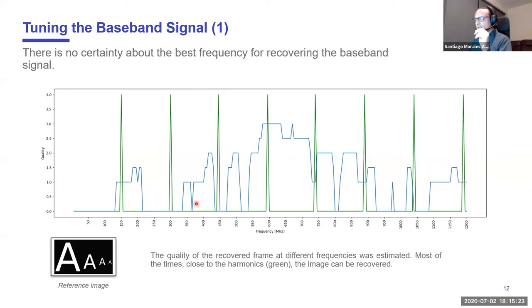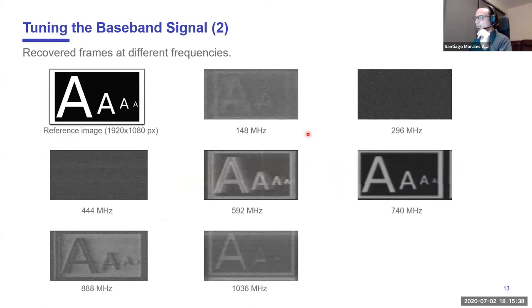In blue, I'm showing you the quality of the recovered video frames. At the first harmonic, we can recover somehow the information, although the quality is not very good. At the second and third harmonic, we cannot recover easily the information. Maybe there is a difference in that part of the spectrum, but at the fourth and fifth harmonic, the information can be recovered easily. Here we have our reference image. Here is how it looks at the first harmonic. You can see there is information there, although it is not very good. At the second and third harmonic you cannot see anything, but at the fourth and fifth harmonic you can see there is a reconstruction of the image.